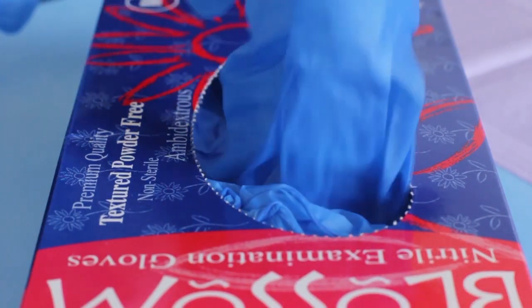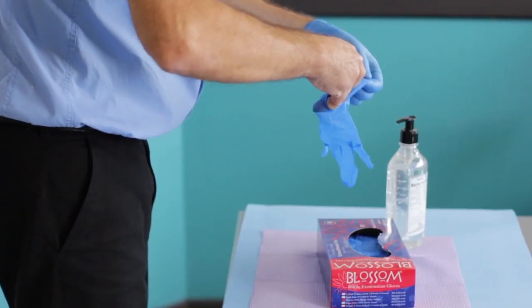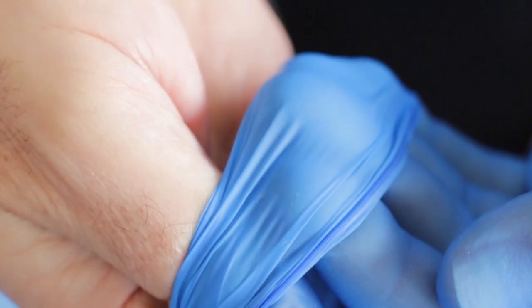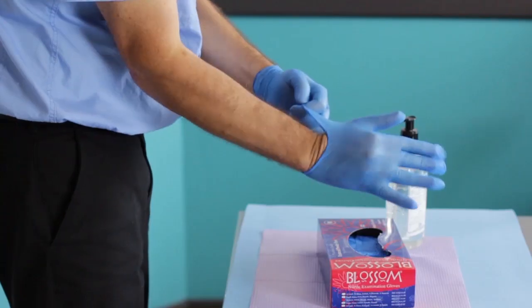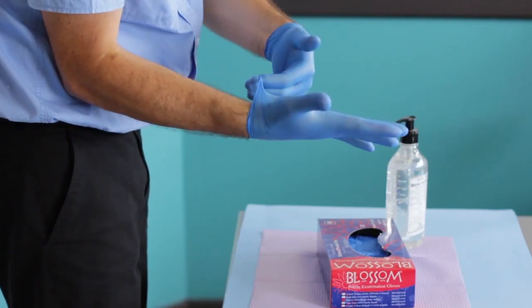With the bare hand, take a second glove from the box, again only touching the glove's cuff or wrist. Turn the external surface of the second glove on the folded fingers of the gloved hand. Then, glove the second hand, while being careful not to touch the forearm skin with a gloved hand.